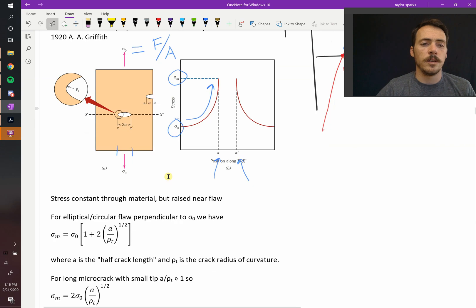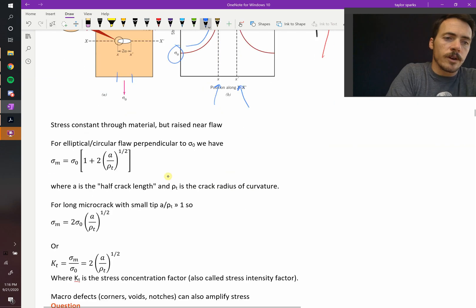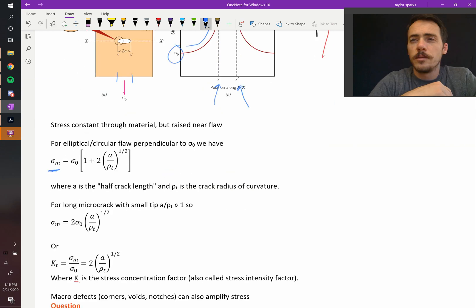In fact, they calculated what it ought to be. The maximum stress, sigma M, should be equal to sigma naught, that's your applied stress, that's the original force over area, but multiplied by this quantity of one plus two times the square root of your half crack length divided by rho T, where rho T is your crack radius of curvature.